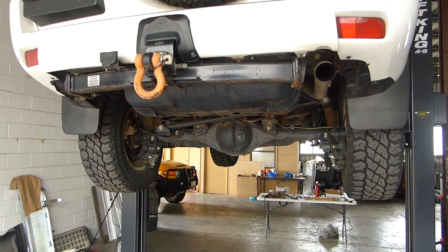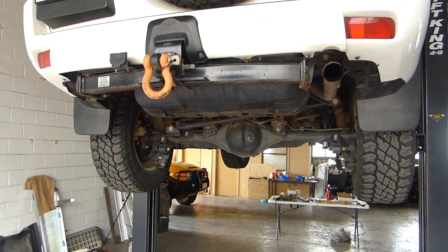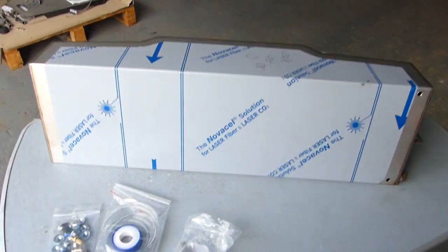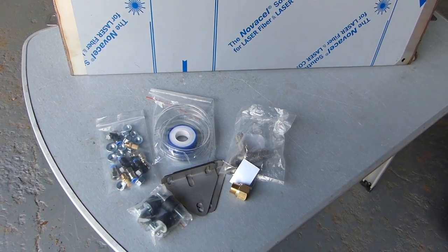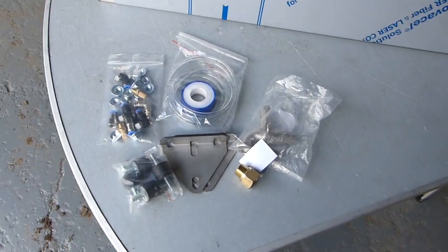This Prado is getting a rear underbody water tank. These are stainless steel 316, 30 liters, and they come with the following fitting kit.